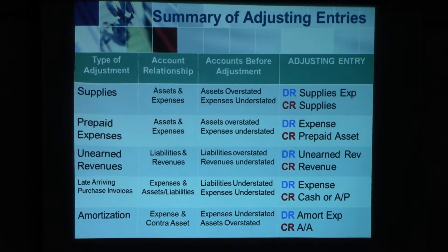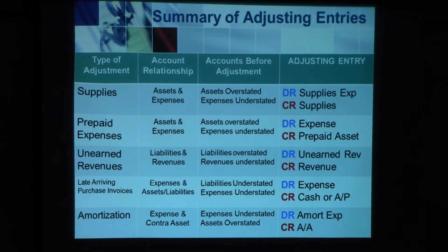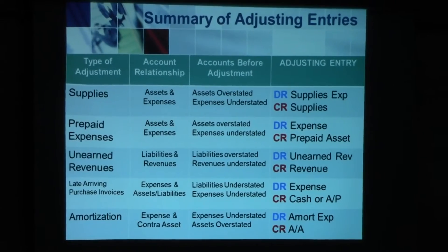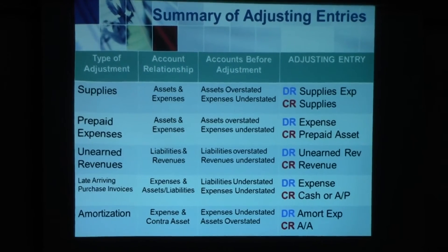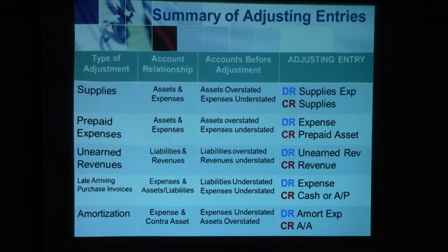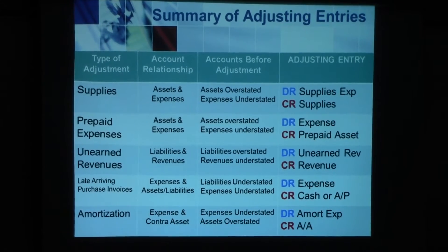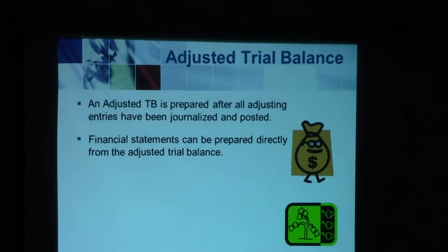The amortization entry is: debit amortization expense and credit accumulated amortization for that asset. You have to remember that accumulated amortization is always very particular to that asset, and remember that it is a contra-asset account, which means the ending balance is a credit balance for accumulated amortization. However, it is still recorded on the asset side.